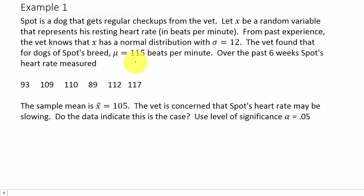This is the population mean. Over the past six weeks Spot's heart rate measured these values here: 93, 109, 110, 89, 112, 117. This is the average heart rate of all the dogs of Spot's breed, and this is the standard deviation of all the dogs breeds of the same breed as Spot. The sample mean is x bar equals 105. That's the average of these values here.